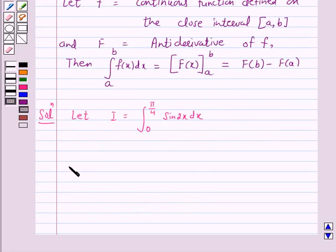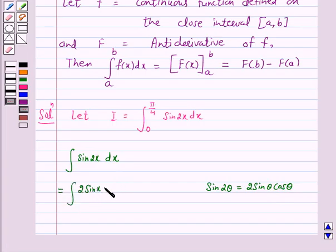First we will find the indefinite integral of sin 2x dx. Now we know that sin 2θ equals 2 sin θ cos θ, so this indefinite integral can be written as integral of 2 sin x cos x dx.